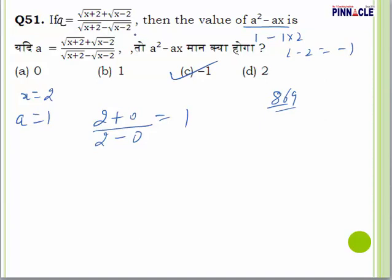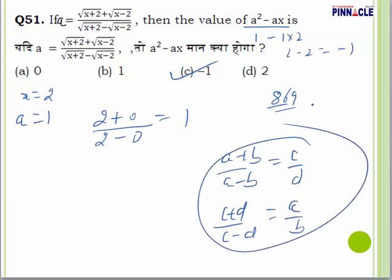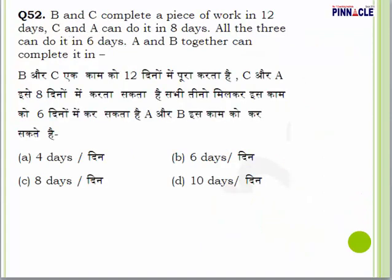Alternatively, you can find the solution using the componendo and dividendo rule: if a plus b over a minus b equals c over d, then c plus d over c minus d equals a over b. You can apply this, but that will be lengthier. The substitution technique is easier for this type of question.